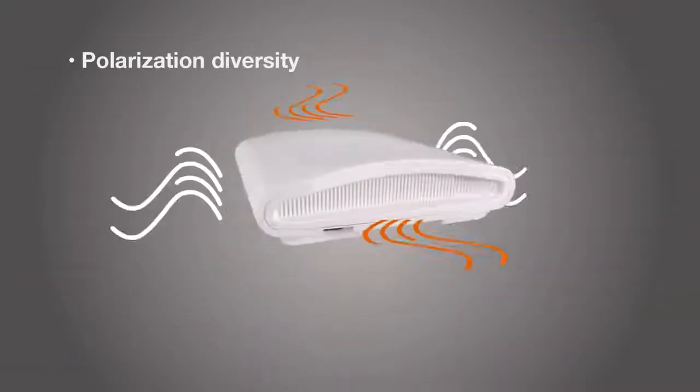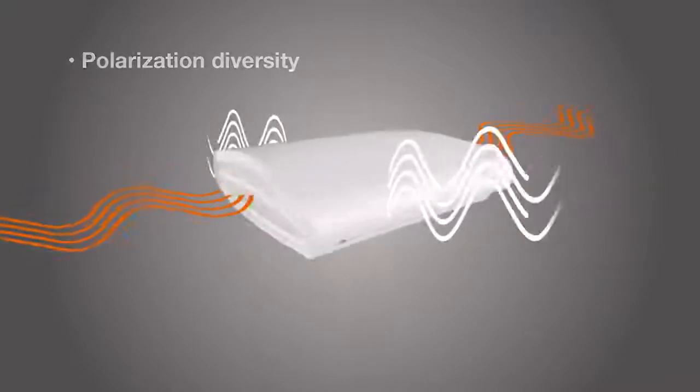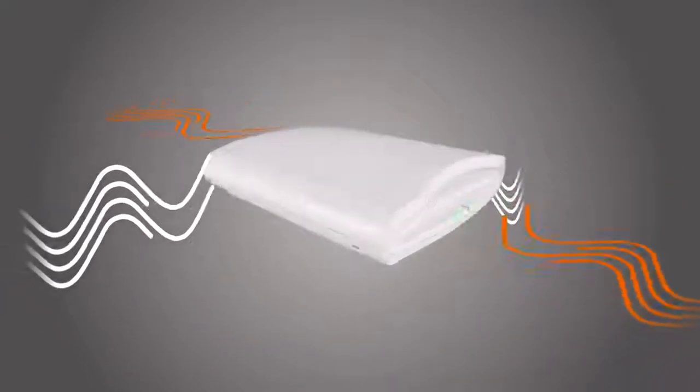What's more, polarization diversity on the R710 offers unmatched reception of mobile client signals by automatically adjusting for the constantly changing orientation of smart devices to keep Wi-Fi connectivity consistent.